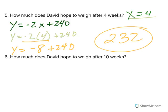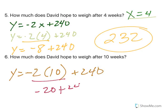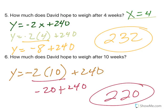Okay, what about 10 weeks? Well, I take that same formula, but I plug in 10 for x. And again, I multiply, so negative 20 plus 240. David hopes to weigh 220 pounds after 10 weeks. That would be a great weight loss system, right?